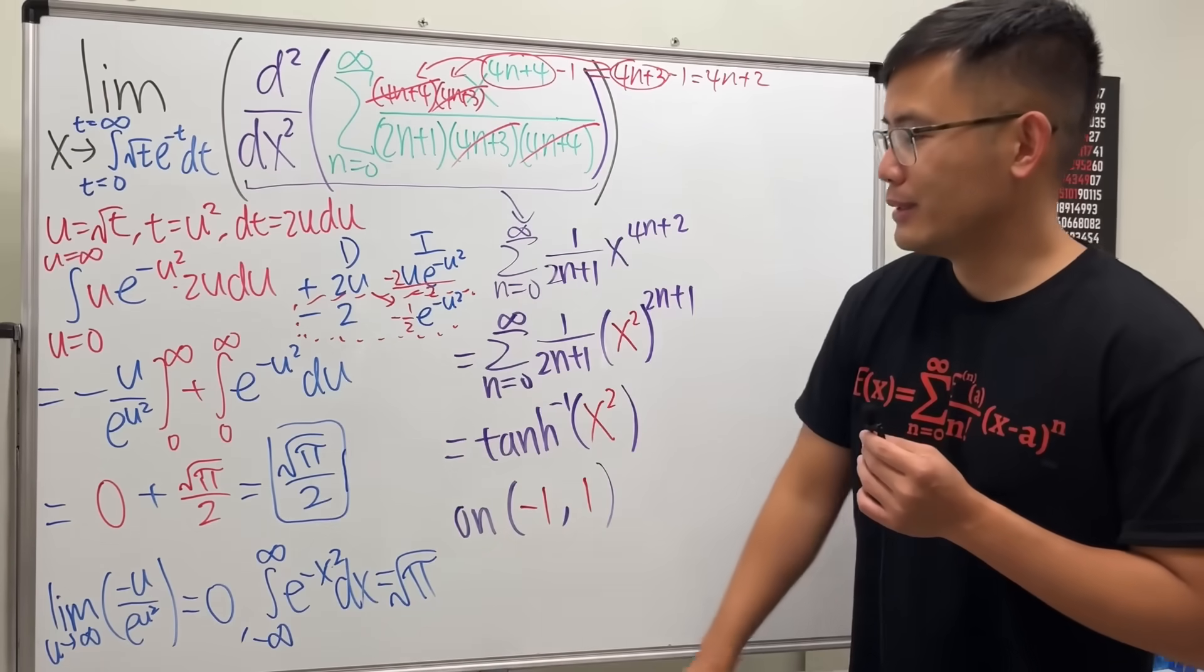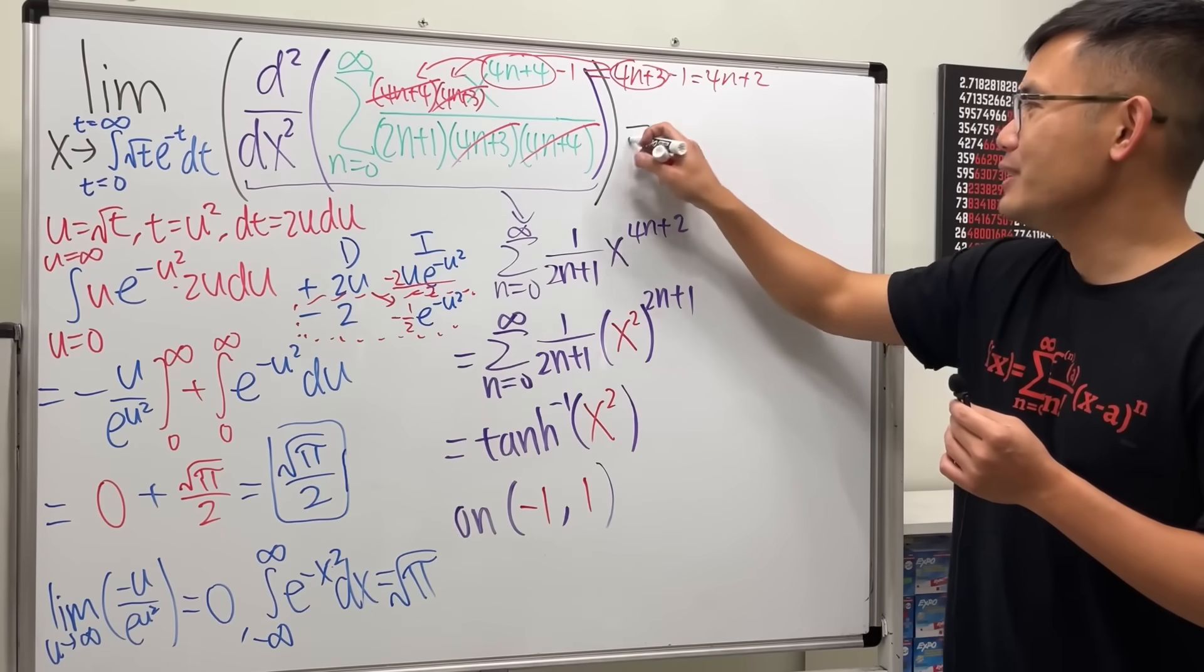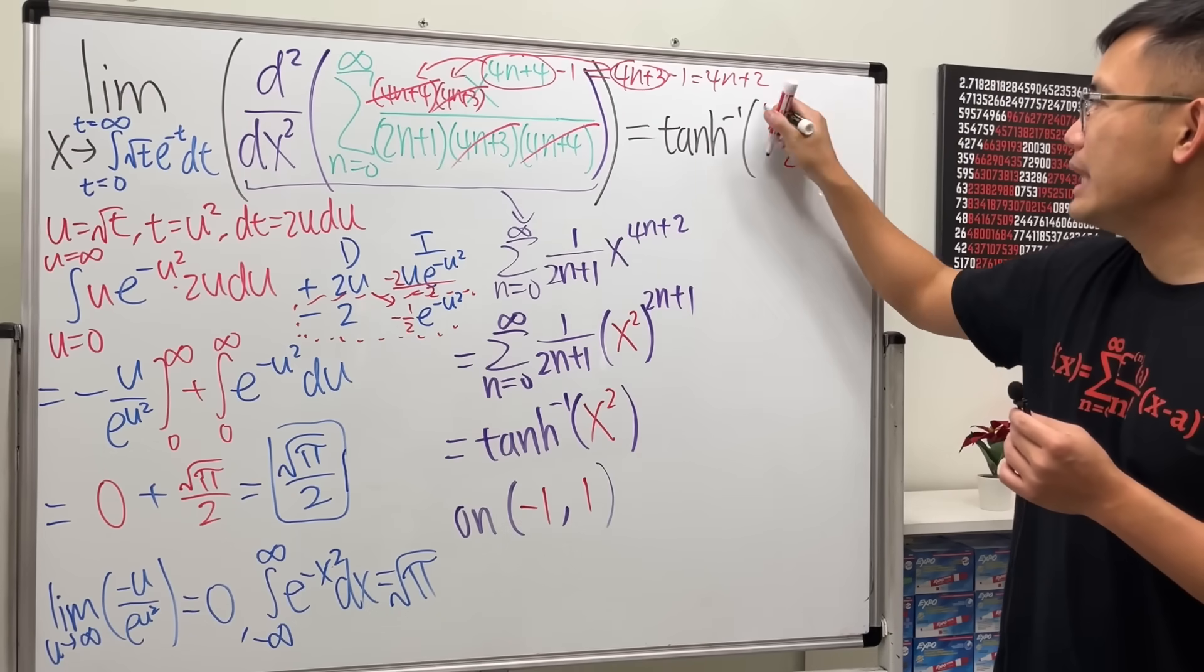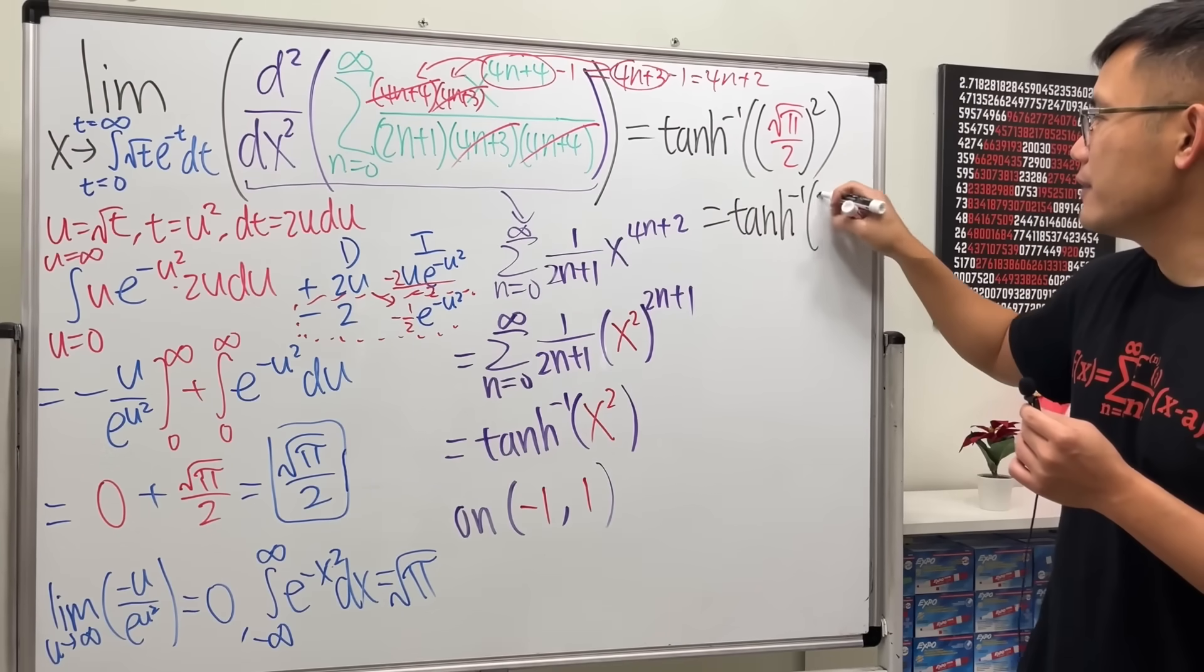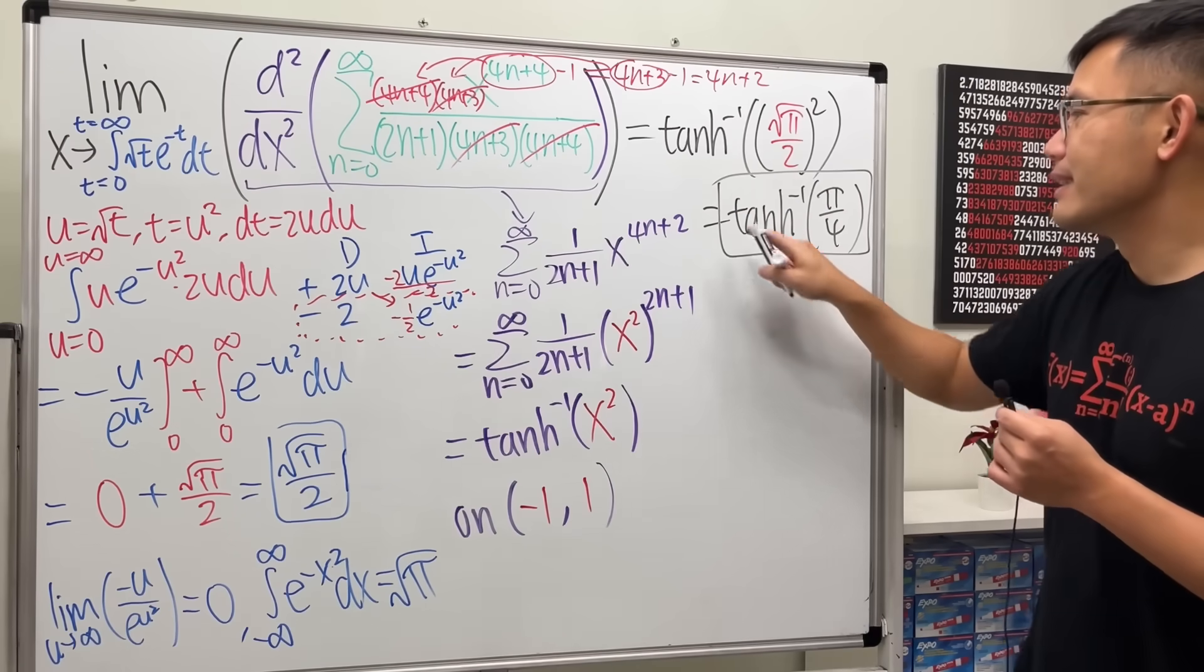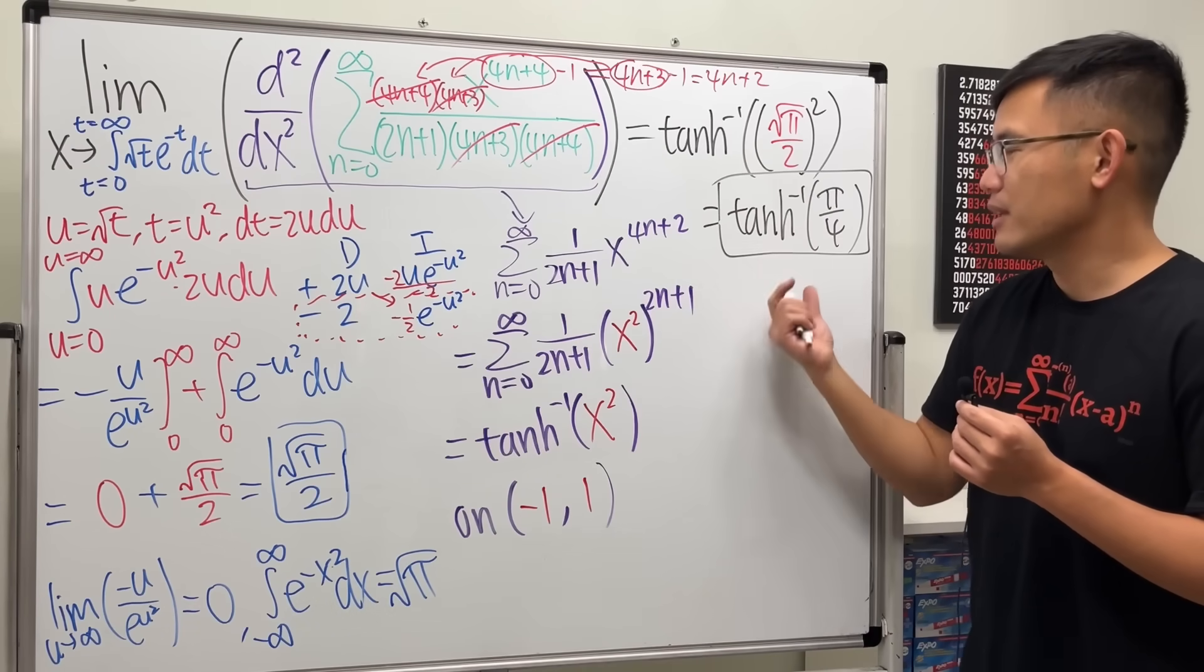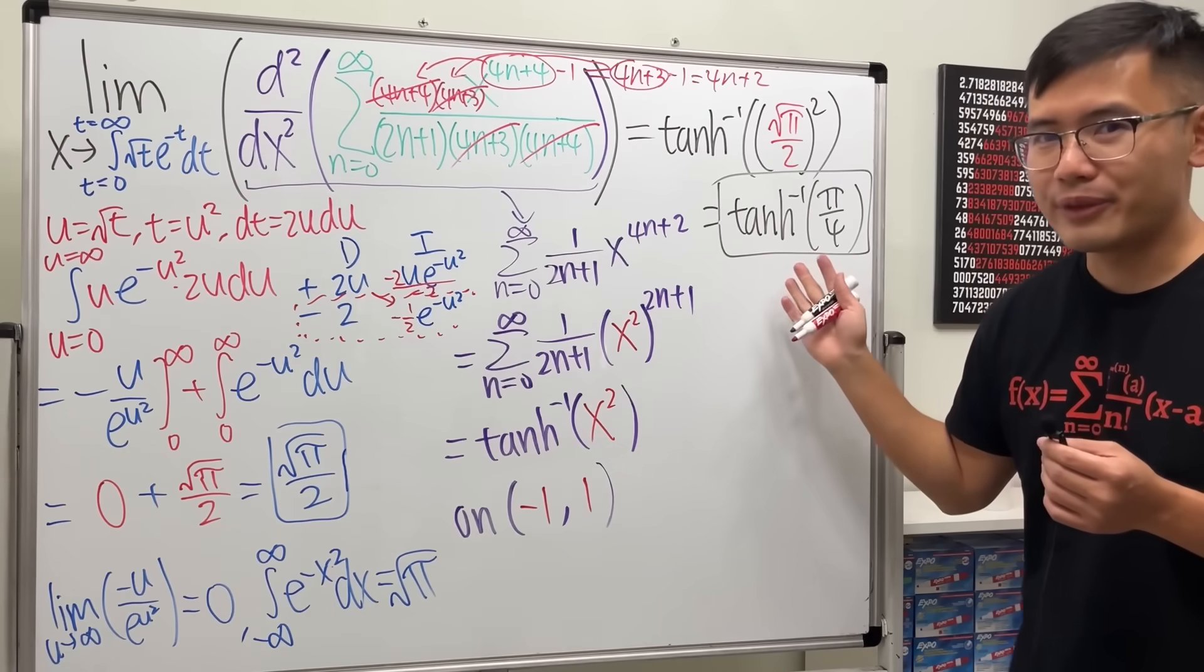our final answer is, we'll just put this in there. So all that is just equal to the inverse hyperbolic tangent of square root of pi over 2, and then we square that, aka inverse hyperbolic tangent of pi over 4. Yay. Can we simplify this a little bit? You can write the natural log version of the inverse hyperbolic tangent, but I think I'll just leave the answer like that. This is approximately 1 something, though.